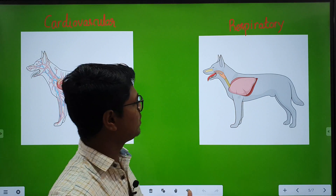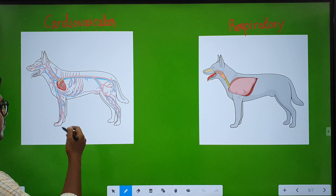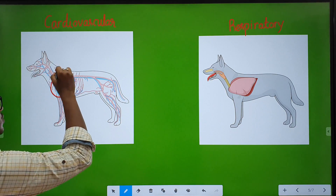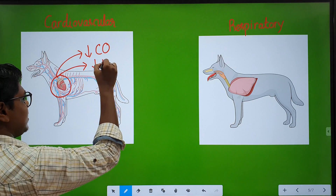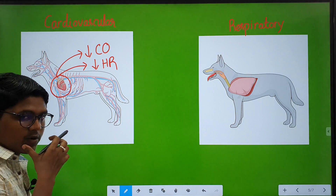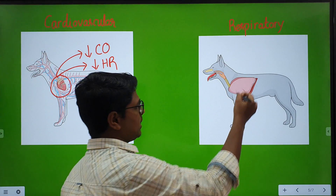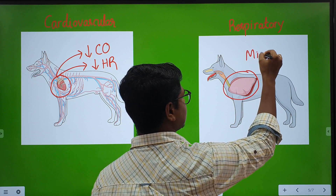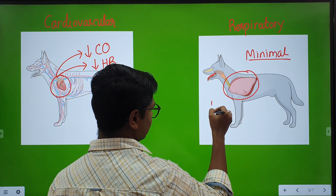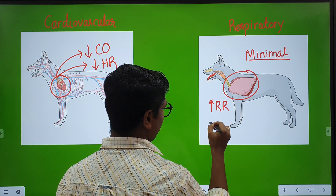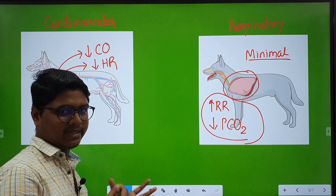Next, the effects on different systems — the important ones are the cardiovascular system and the respiratory system. For the cardiovascular system, they usually reduce cardiac output just like phenothiazines, but they usually decrease heart rate. While in case of phenothiazines, you will not find any change in heart rate; in some patients you may find slight tachycardia. For the respiratory system, they have minimal effect just like phenothiazines, but you may find a slight increase in respiration rate and a decrease in partial pressure of carbon dioxide — these are very minimal and not significant.